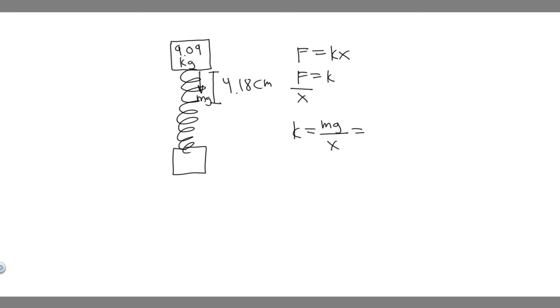Keep in mind X needs to be in meters when you do this. So let's start plugging in. The mass is going to be 9.09 kilograms times G, which is 9.81 or 9.8, and then divide by X. X has to be in meters. Currently it's in centimeters. To convert, you just divide by 100 because there's 100 centimeters for every meter. So 4.18 divided by 100 is just 0.0418 meters.